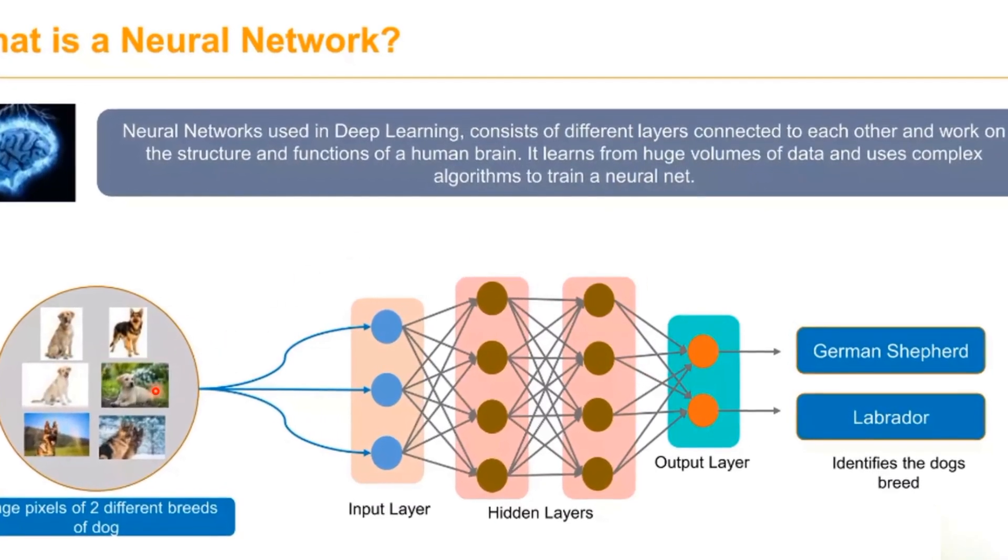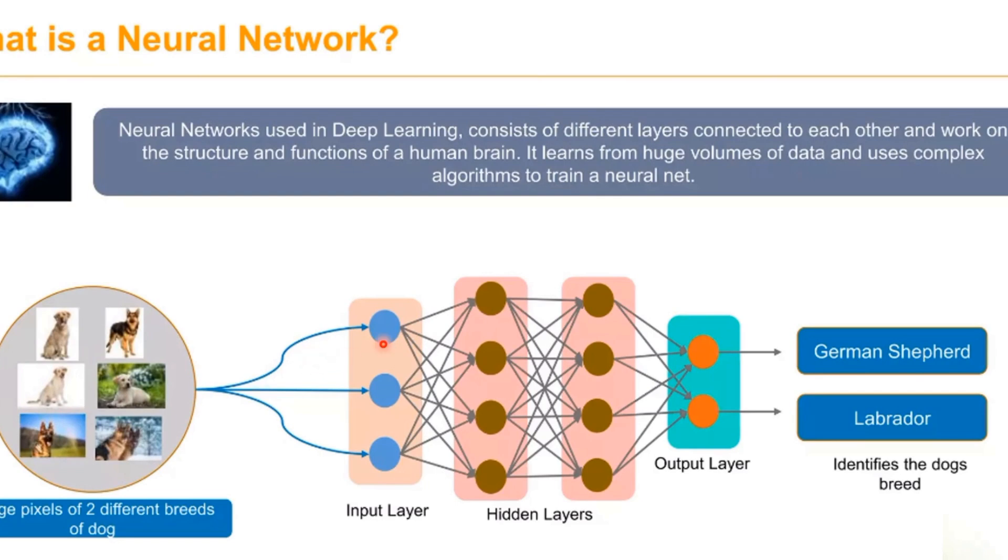They process huge volumes of data and use complex training algorithms to train the neural network. For example, given two different breeds of dogs, it identifies which one is the German Shepherd and which one is the Labrador.